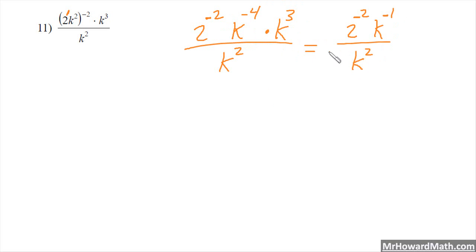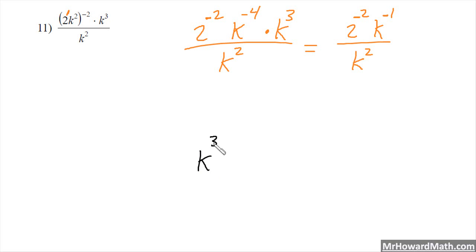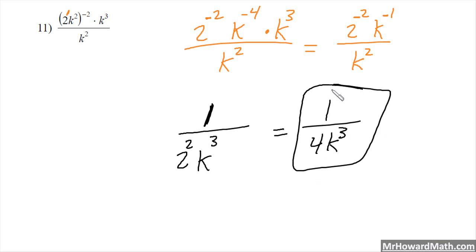Next, I'll figure out the final exponent for the k base. I have k squared on the bottom and k to the negative 1 on top. The denominator's exponent is 3 bigger — from negative 1 to 2 is a difference of 3 — so the bottom wins the k by 3, giving k cubed in the denominator. Then the 2 to the negative 2 power in the numerator moves to the denominator with a positive exponent. Nothing is left in the numerator so I put a 1 there. Finally, 2 squared becomes 4, so the answer is 1 over 4k cubed.